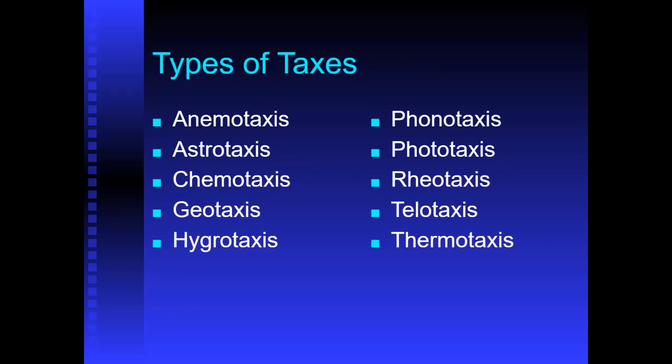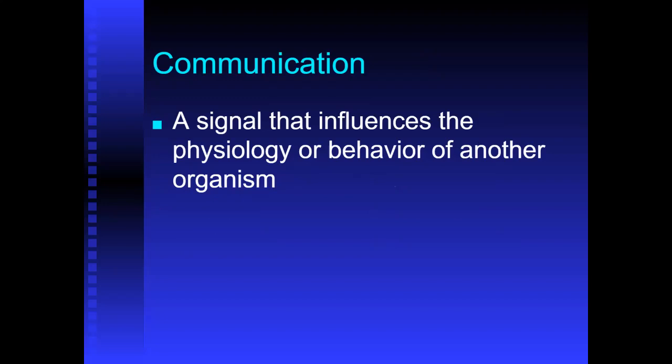There are all sorts of different types of taxes: thermotaxis is related to temperature, chemotaxis to smells, astrotaxis to perhaps starlight orientation, phototaxis for light and vision, and geotaxis relating to gravity. There's a variety of different things that insects will move toward or away from.